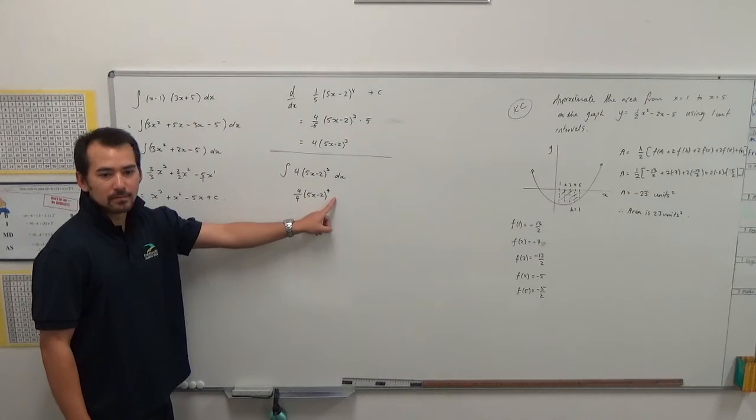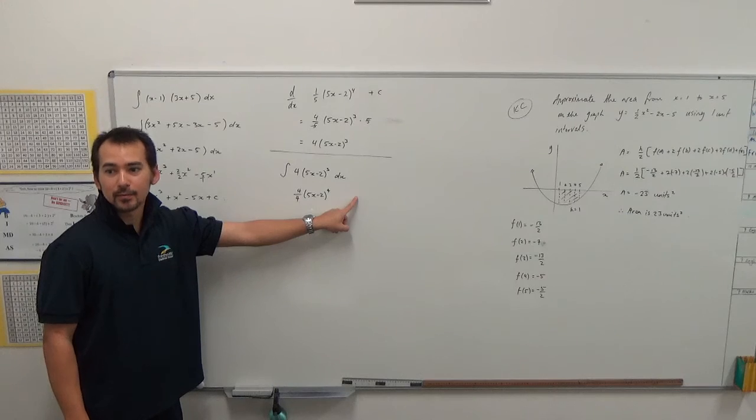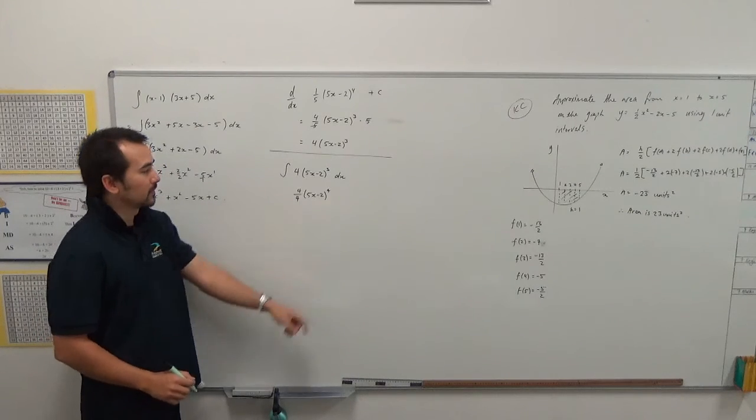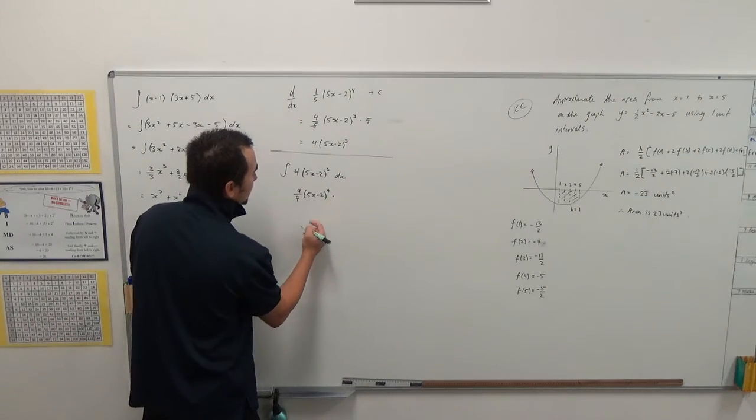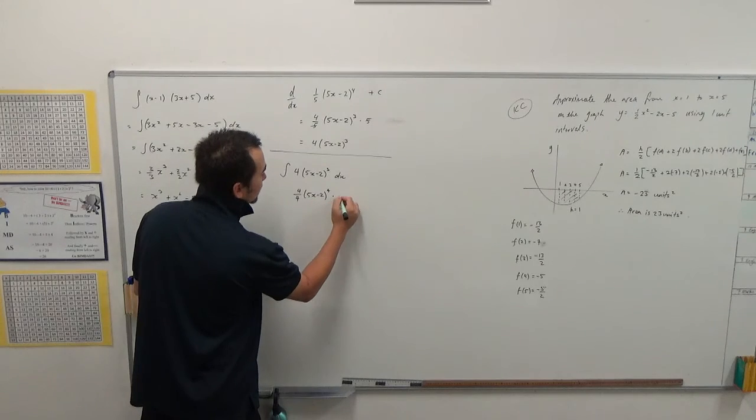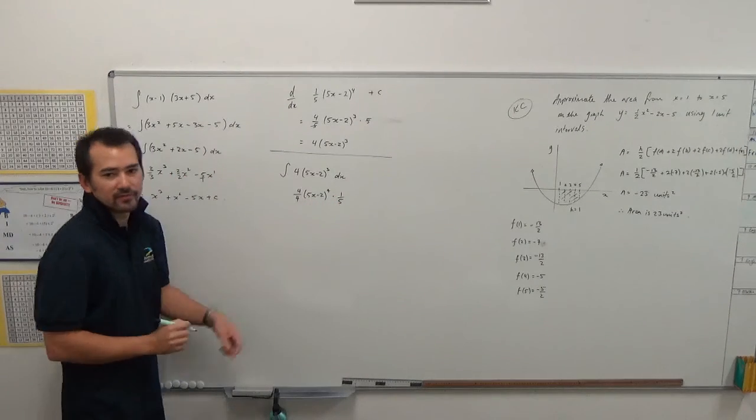And instead of multiplying the inside, we're going to divide the inside. So, times by, instead of times by five, we're going to times by one-fifth. That's the same as dividing by five, right?